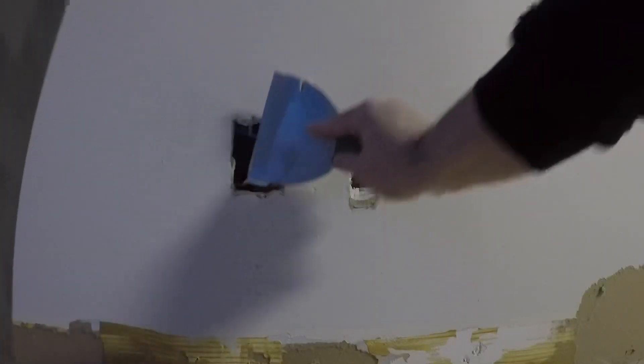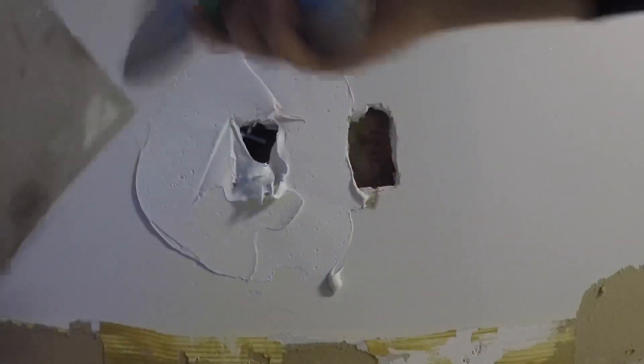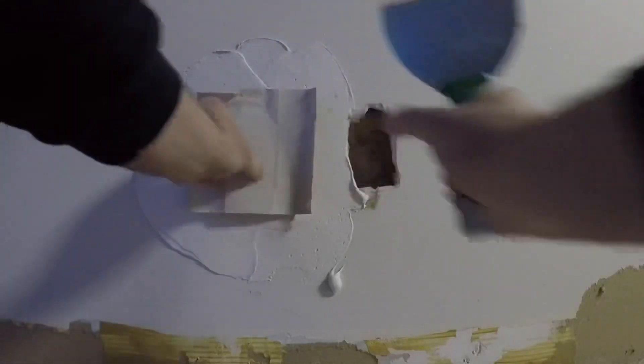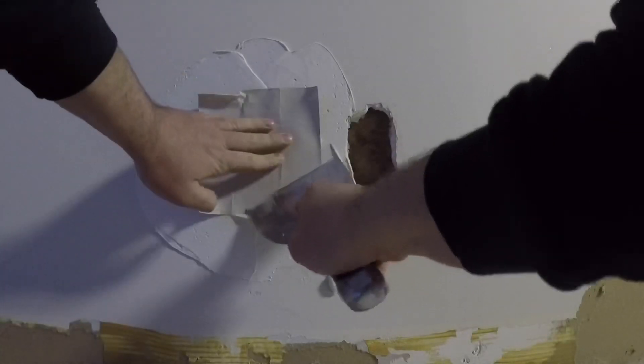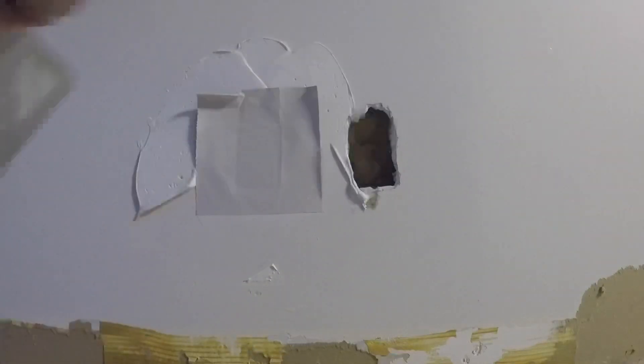So what you're going to do, take these out, take some regular mud. I like to put a little bit inside the hole, there's mud around it, stick your patch in like so, and you're basically pulling all that mud from underneath the paper.